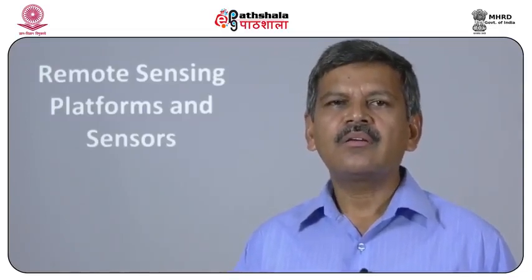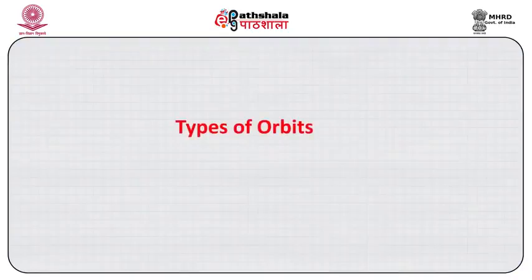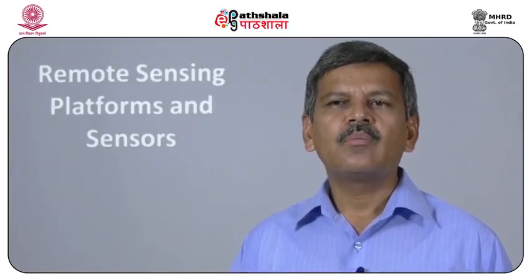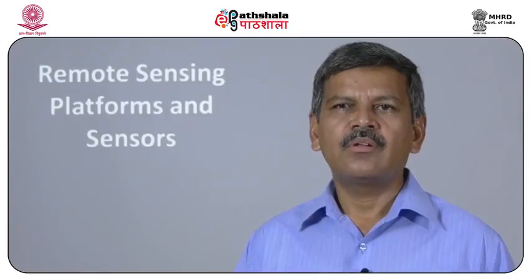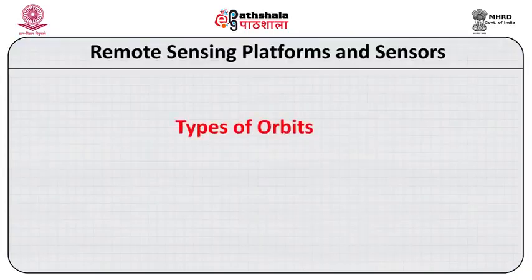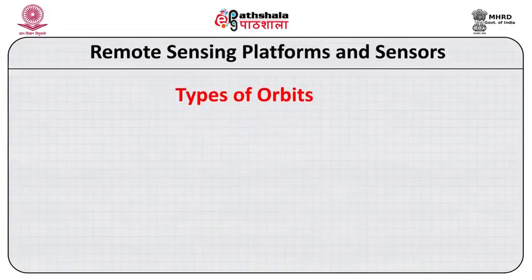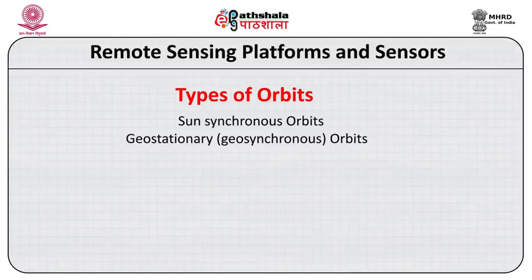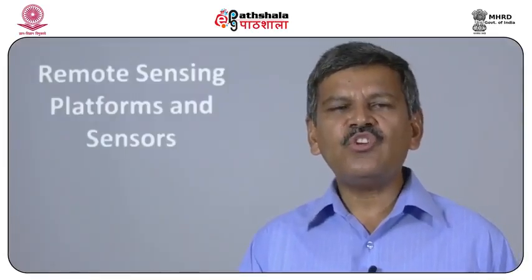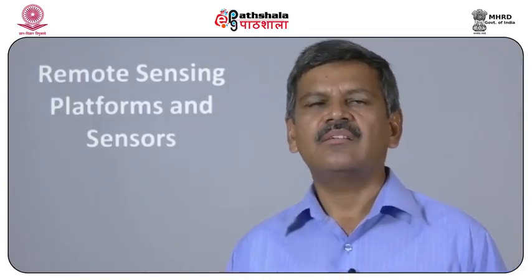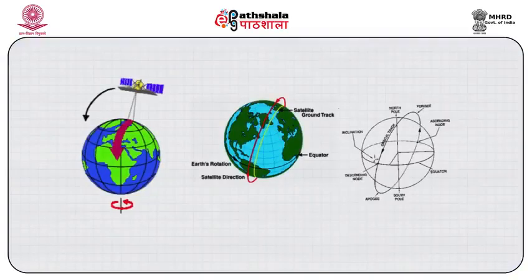Then come to the types of orbit, because we should know about the concept of orbit since satellites are fixed accordingly. There are two types of satellite orbit: one is sun-synchronous and another one is geostationary or geosynchronous. Sun-synchronous means the satellites which are synchronized with the sun. Here, the satellite is observing a particular object or area of earth at a fixed time.